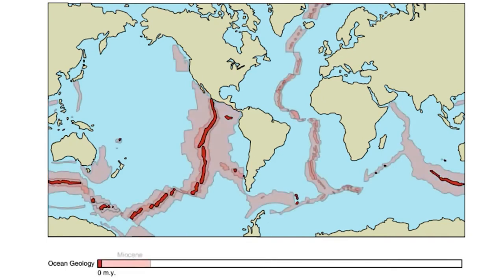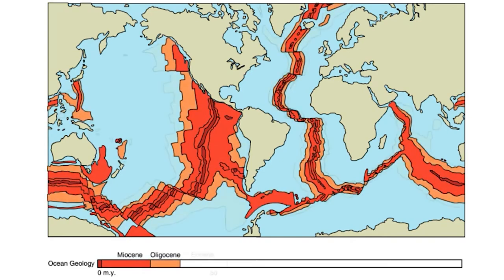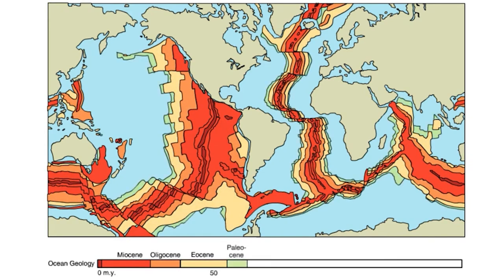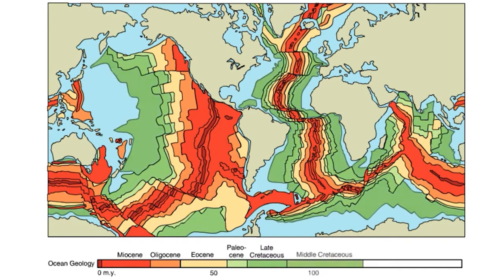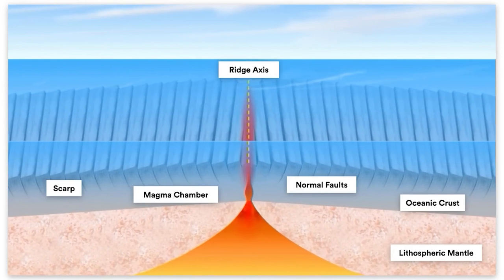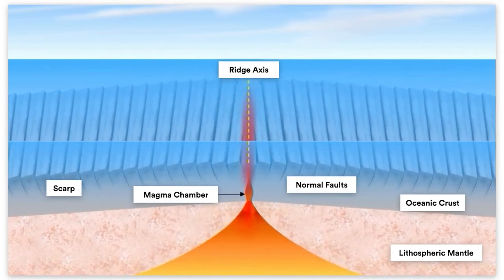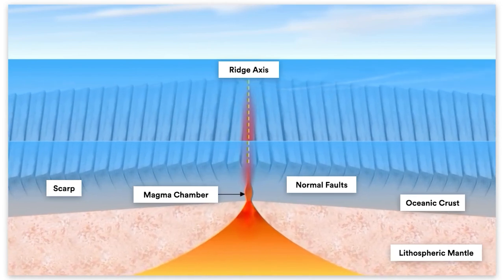But the farther you go from the ridge, the older the seafloor gets. This means that the centre of the ridge is constantly creating new crust, while older crust is constantly getting pushed outward. So thanks to divergent boundaries, the ocean floor is actually like a giant conveyor belt, consistently renewing itself. As the plates pull apart, magma rises, creating new oceanic crust and pushing the seafloor outward. This process is called seafloor spreading.